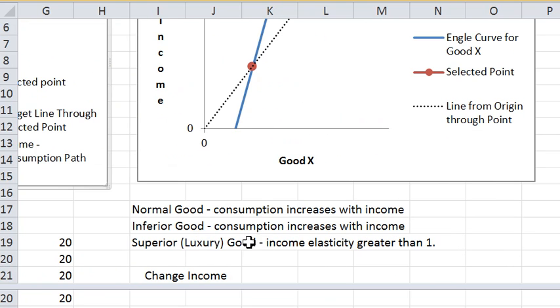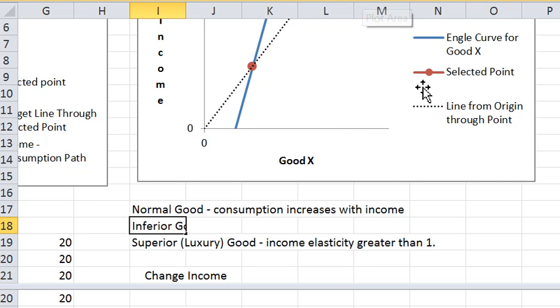An inferior good is one where consumption decreases with income. Consumption decreases with income. Let's change that. Decreases. And a luxury good or superior good is one which is strongly normal.